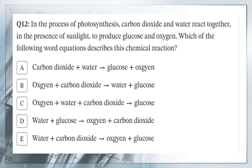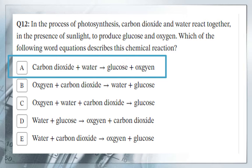Question number 12: in the process of photosynthesis, carbon dioxide and water vapor react together — they are before the arrow. In the presence of sunlight they produce glucose and oxygen. Which word equation describes this reaction? Carbon dioxide plus water gives glucose and oxygen gas.